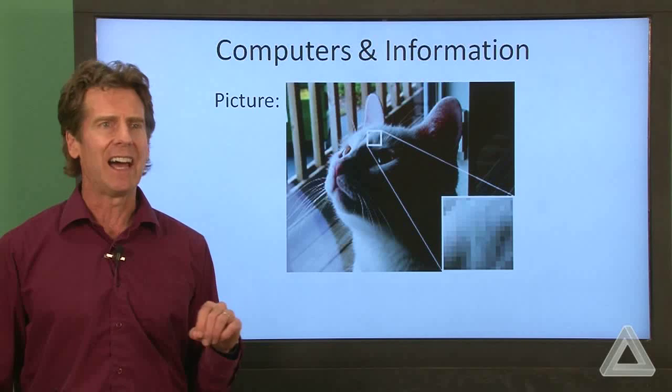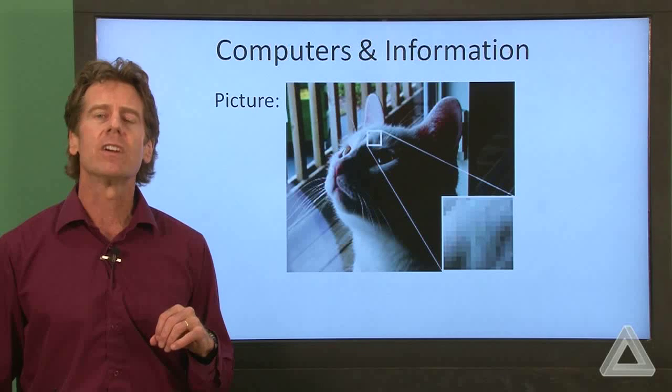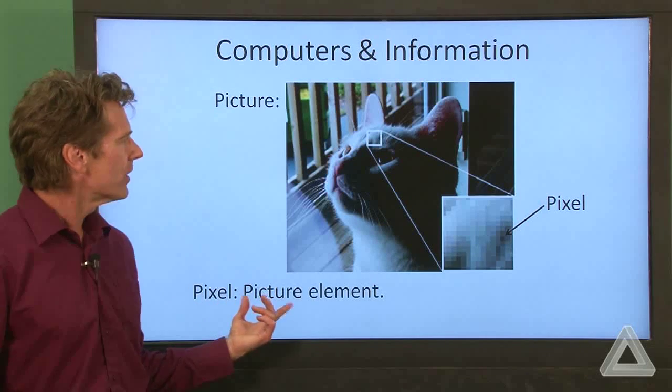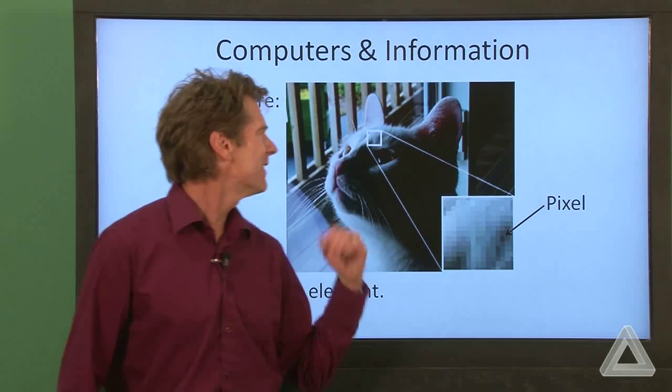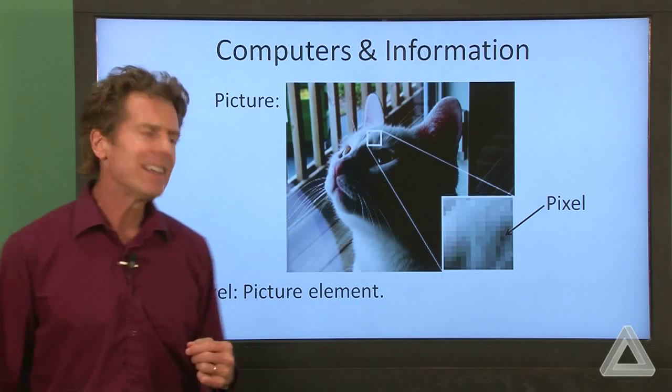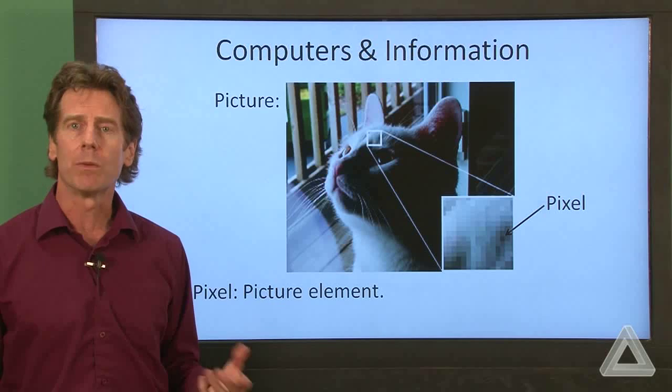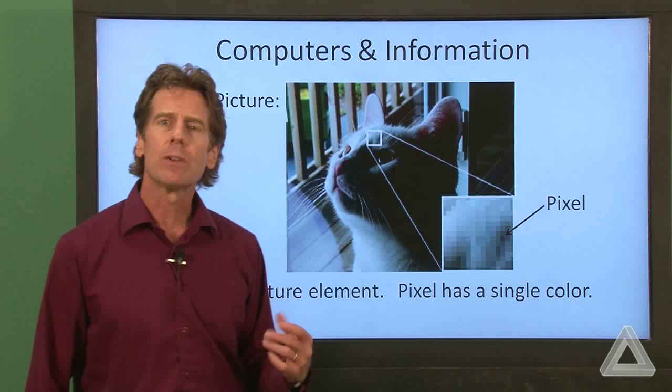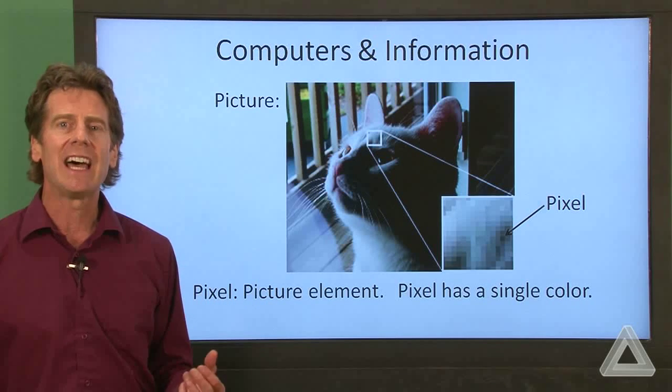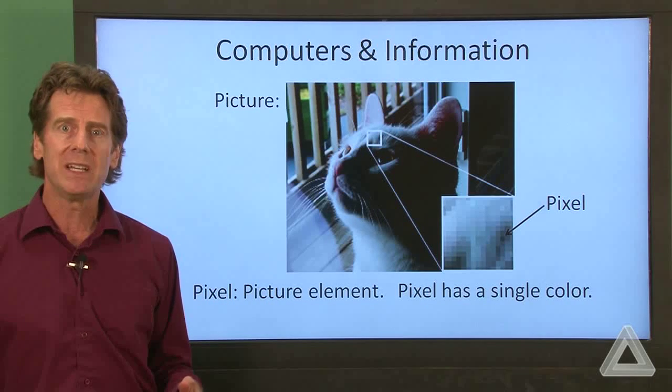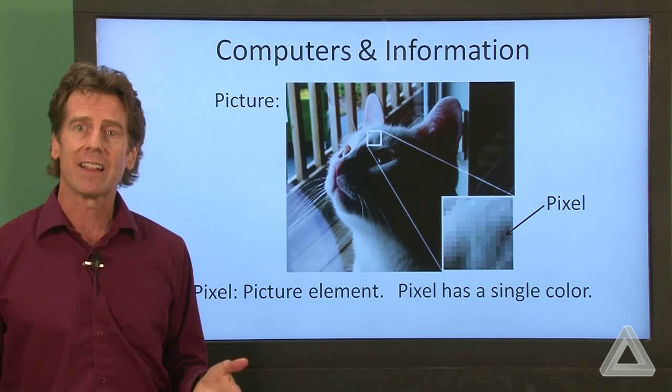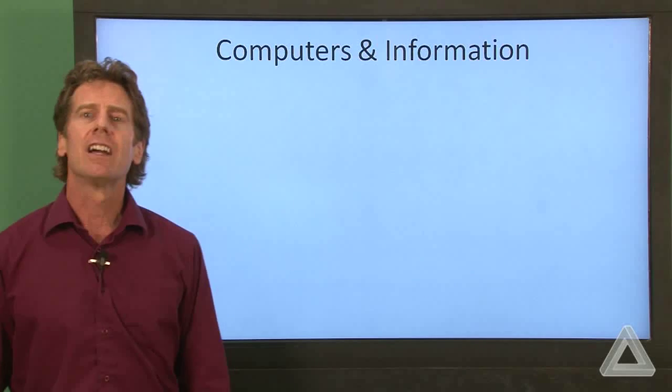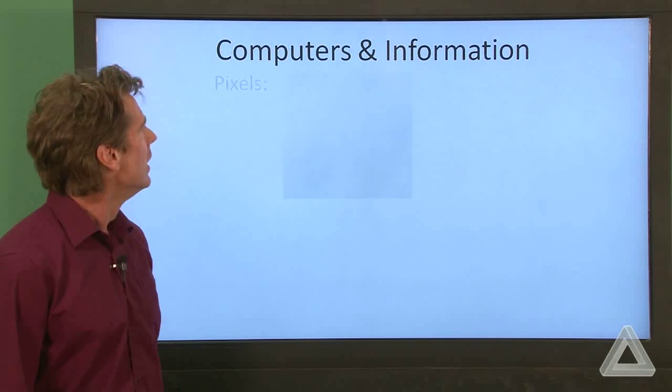So here's a picture that I grabbed from Wikipedia of a cat. And if you look closely enough at the display of your computer, you'll see that it consists of little squares known as picture elements. So we expand this portion of the picture and there's a single picture element or pixel. And pixels have a single color. So provided we can describe that single color in terms of bits, then we could just think of the picture as a collection of these picture elements. So how do we do that? How do we translate that color into bits?